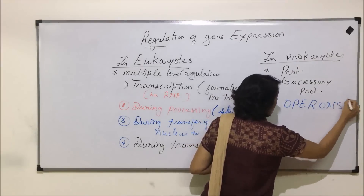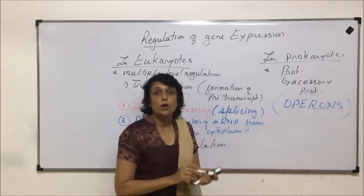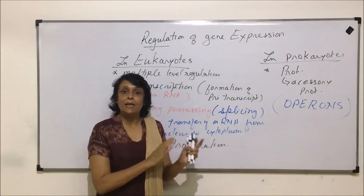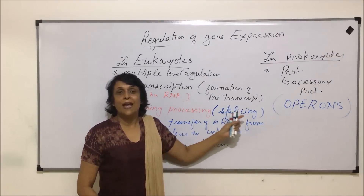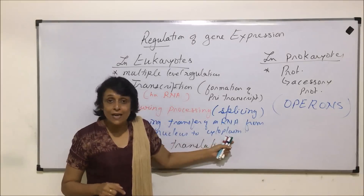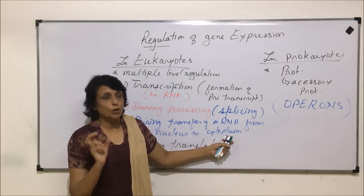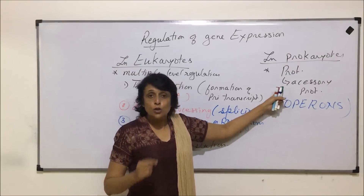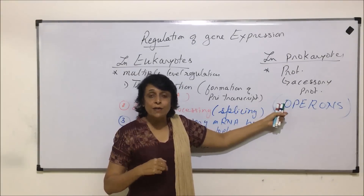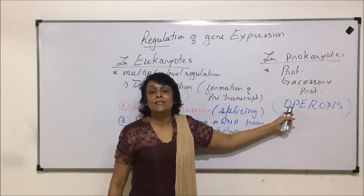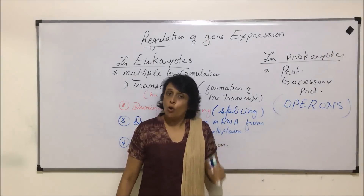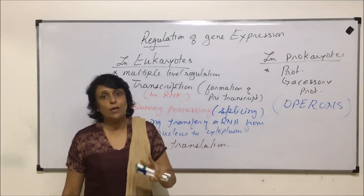This complete structure is known as an operon. Operons are structures where we find the structural genes along with the regulatory mechanism by which those genes are going to be transcribed. Their transcription can be both induced and inhibited by certain accessory proteins, and that complete arrangement is called an operon.